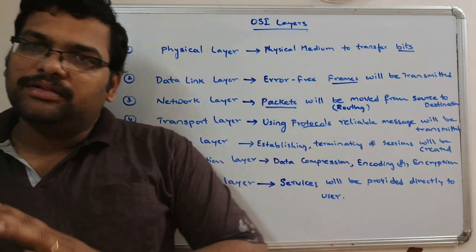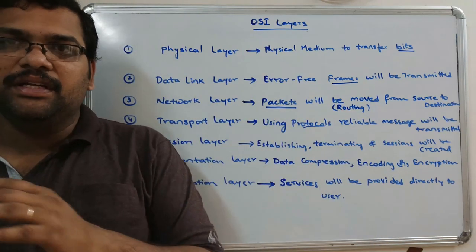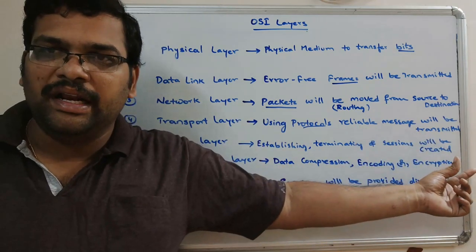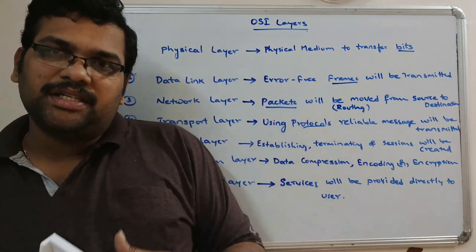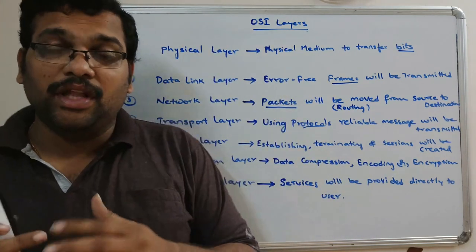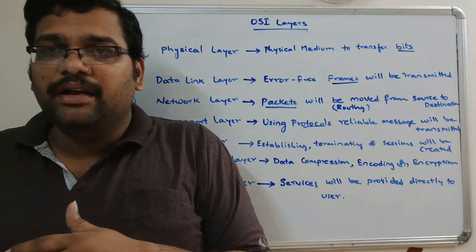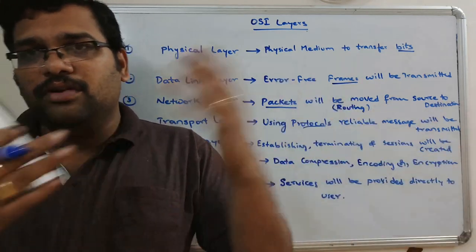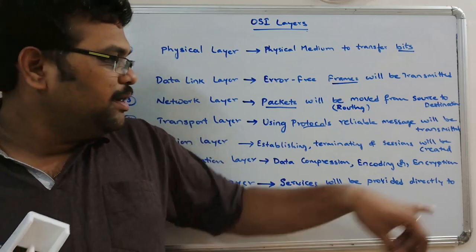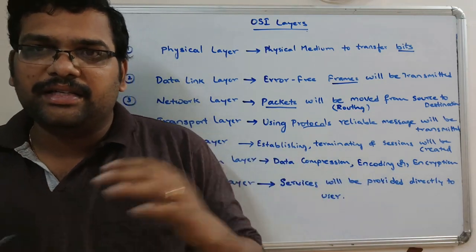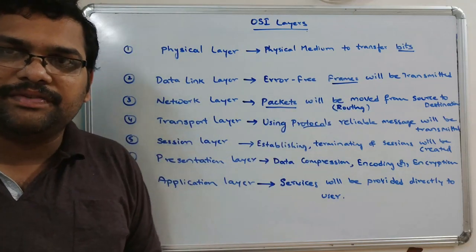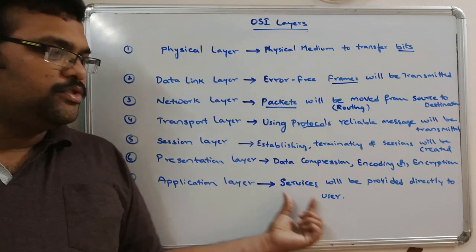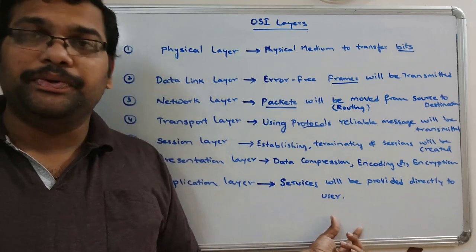In the presentation layer, before sending or receiving, certain operations are applied to the data: data compression, encoding, or encryption. Similarly, data decompression, decoding, and decryption are also handled here. If the data is compressed at the sender side, it is decompressed before receiving; if encoded at the sender, it is decoded at the receiver; if encrypted at the sender, it is decrypted before receiving. Coming to the application layer, services are directly provided to the user.